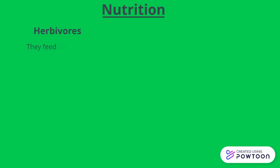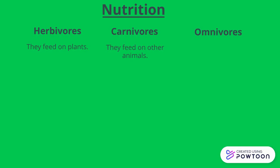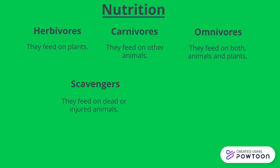Herbivores: they feed on plants. Carnivores: they feed on other animals. Omnivores: they feed on both animals and plants. Scavengers: they feed on dead or injured animals. And decomposers: they break down dead plants and animals.